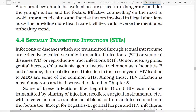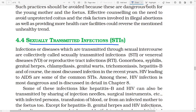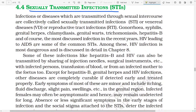Sexually Transmitted Infections. STIs are infections or diseases which are transmitted through sexual intercourse and are collectively known as sexually transmitted infections or venereal diseases. Reproductive tract infections (RTIs), gonorrhea, syphilis, genital herpes, chlamydia, genital warts, trichomoniasis, hepatitis B, and of course the most discussed infection in recent years — HIV leading to AIDS — are some common STIs. Among these, HIV infection is the most dangerous and is discussed in detail in Chapter 8.